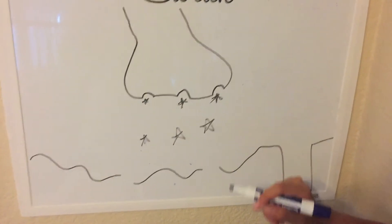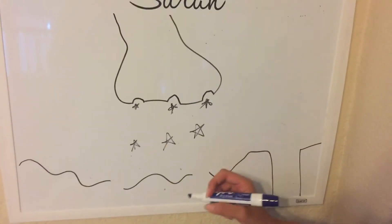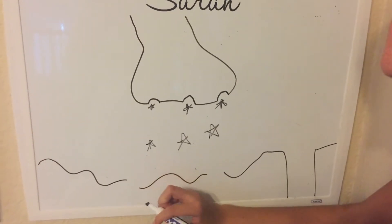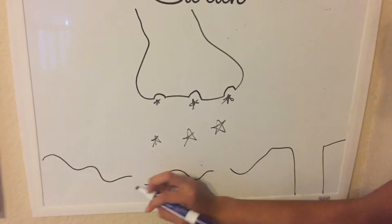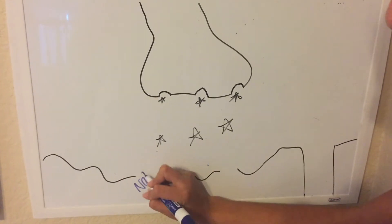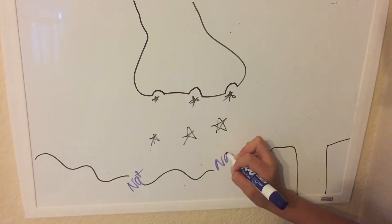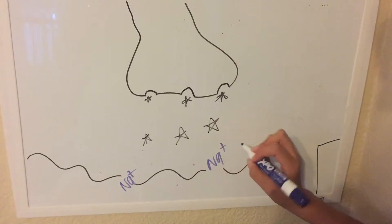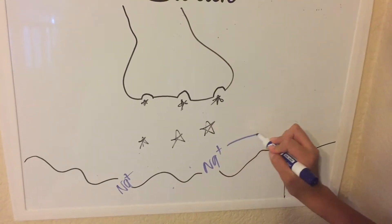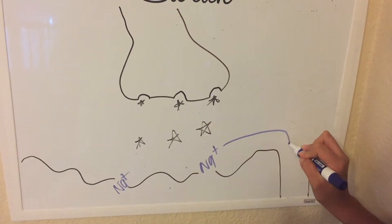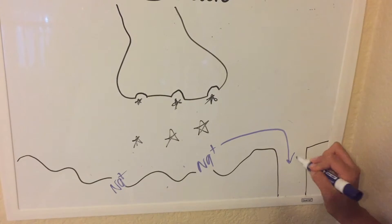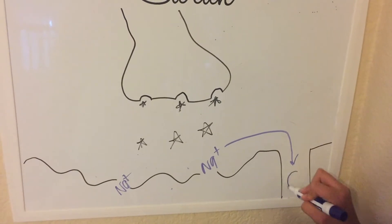Once the gate opens, this causes sodium to depolarize the interior of the sarcolemma. The sarcolemma is the muscle, and then the sodium furthermore goes down the T-tubules, which is right here.